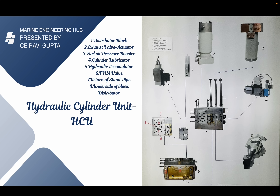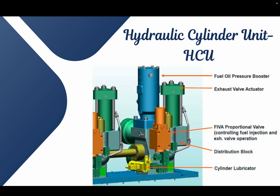I guarantee after watching the video you will know what changes have been made in an exhaust valve, fuel pump, and the fuel oil booster unit. As you know, this is the hydraulic cylinder unit which I explained in my last part — how the SCU unit is designed and the different valve arrangements. If you want to know about that, please see the description box for the link. Now this SCU basically consists of two parts: the fuel oil booster and the exhaust valve activator, which is controlled by the FIVA proportionate valve, which receives a signal from the CCU and operates based on that signal.